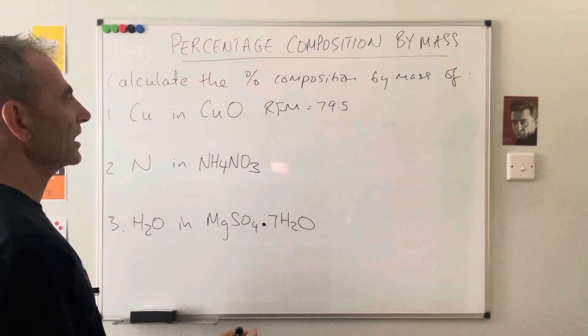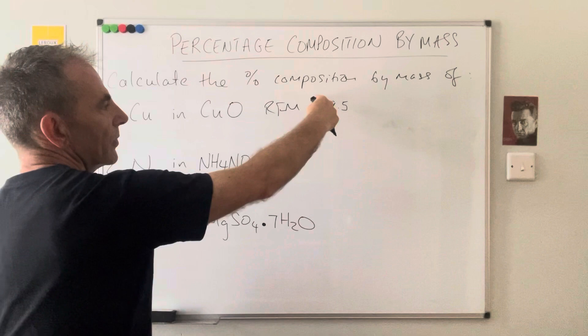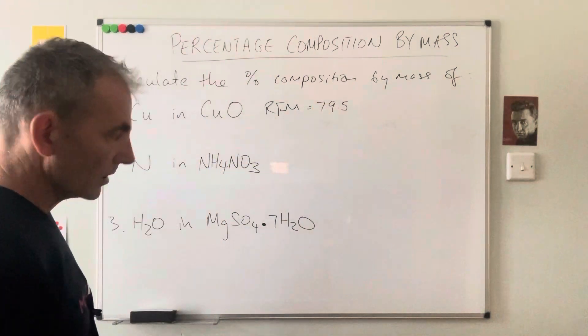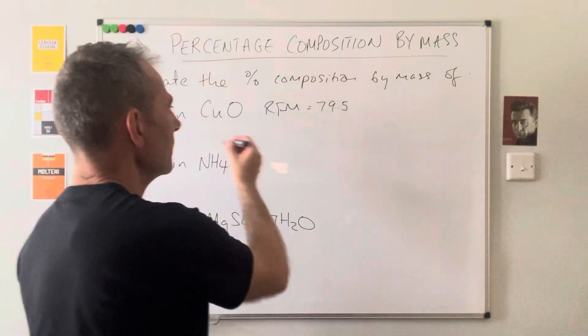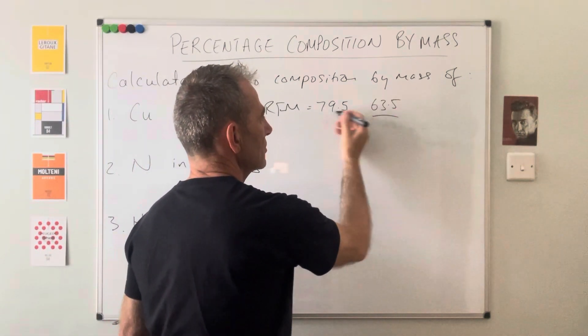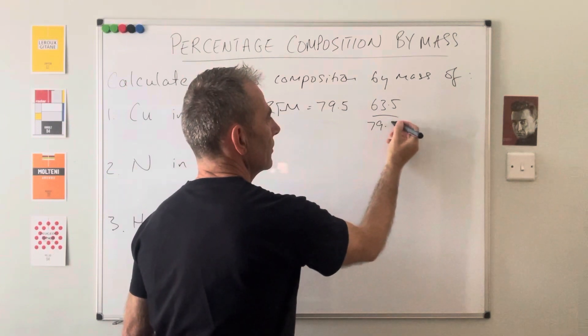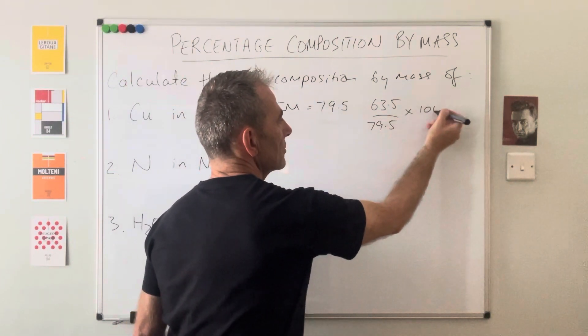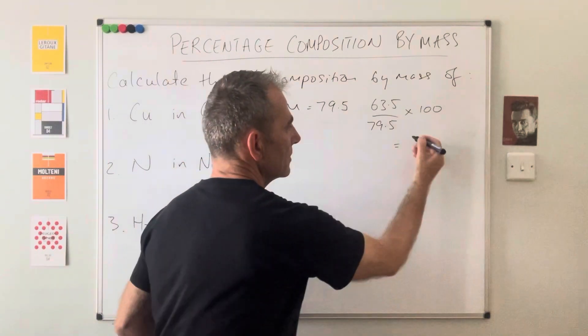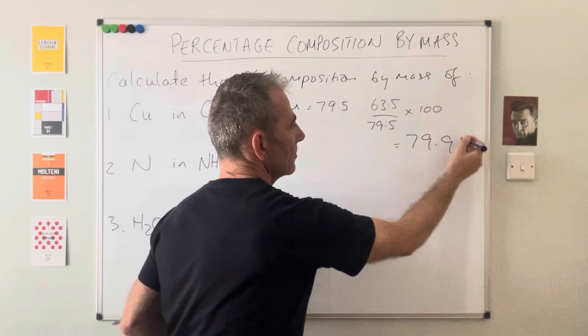Basically, all we're calculating is, of that 79.5, what percentage of the mass is coming from copper. So the way we do that is we take the mass of copper, 63.5, divide by the total, 79.5, times 100, puts it into a percentage, and that comes out at 79.9%. So nice and easy.